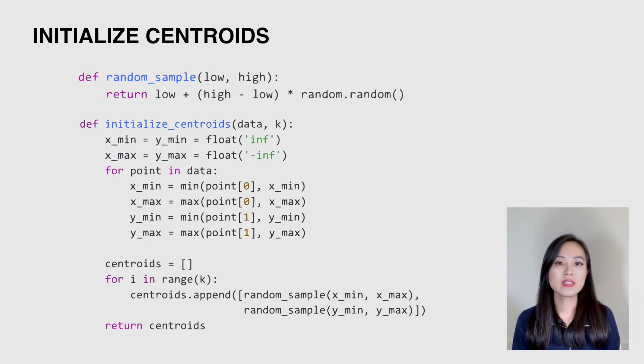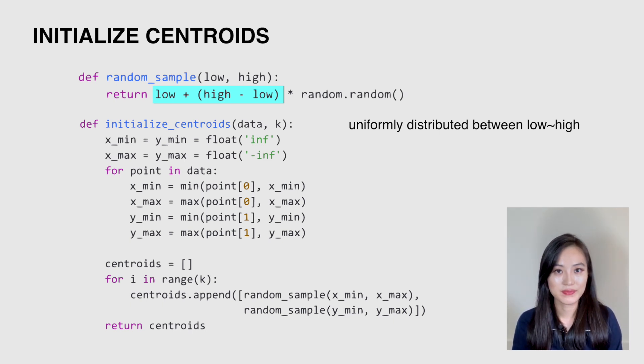Here we introduce another helper function random_sample to sample values between the low and high boundaries. The reason to introduce this function again is to provide clarity of the implementation. In the random_sample function, we use the built-in random.random function to sample a number uniformly distributed between zero and one. Then we can scale that number so its value will be between low and high instead of zero and one.